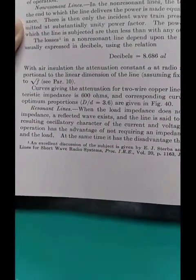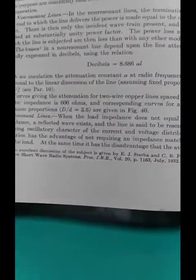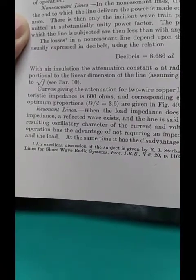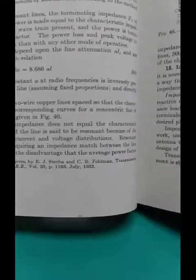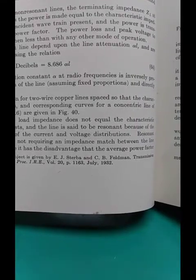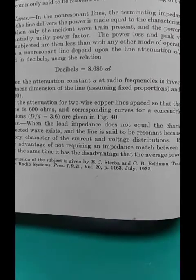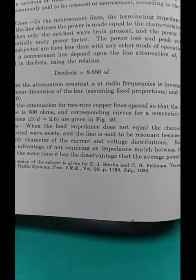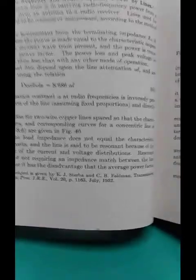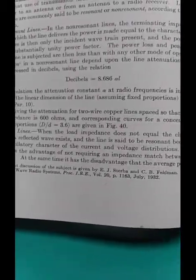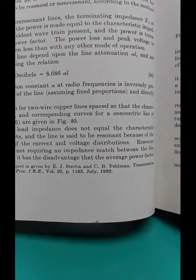Section on transmission lines by our expert. Resonant lines. When the load impedance does not equal the characteristic impedance, and again, I hate that term. It's not characteristic impedance. It's a resisted value. A reflected wave exists and a line is said to be resonant. Oops. That just grossly contradicted the idea that I just showed you with the resonant circuits. Where resonance doesn't show reactance. The line is said to be resonant because of the resulting oscillatory character of the current and voltage distributions. That is what's seen in the circuit with reactance.